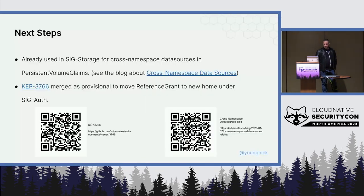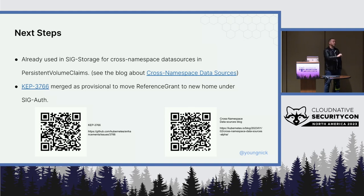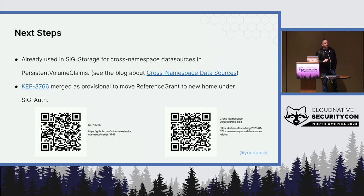In terms of next steps: reference grant is already used in SIG storage for cross-namespace data sources for persistent volume claims. In alpha in the latest release of Kubernetes, in a persistent volume claim you can reference a snapshot of a persistent volume in another namespace using a reference grant object. When the folks in storage were doing that work, they said it kind of sucks that we've got to import all the Gateway API objects just to get reference grant. And we agreed. So we opened a KEP to move reference grant to a new API group home. Those two QR codes are the blog post and the KEP itself. That KEP as of two days ago has actually been merged as provisional.